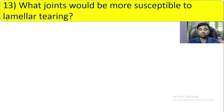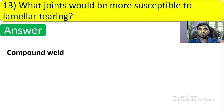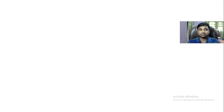Question number 13: What joint would be more susceptible to lamellar tearing? The answer is a cruciform joint. If you see a cruciform joint, it is more susceptible to lamellar tearing.